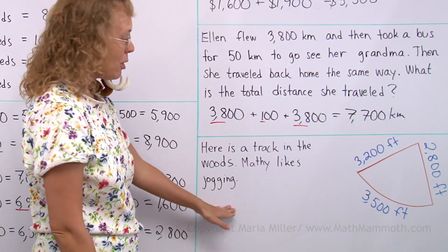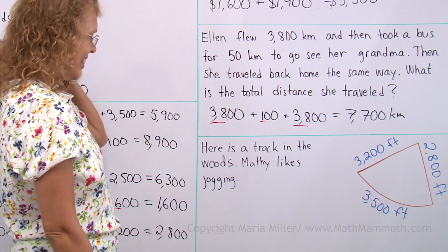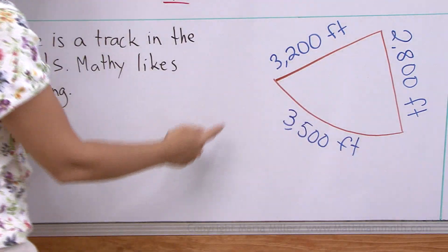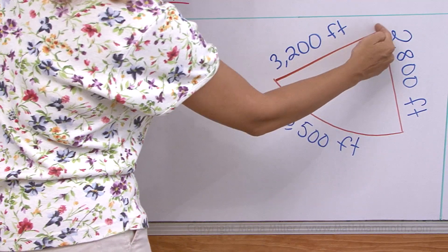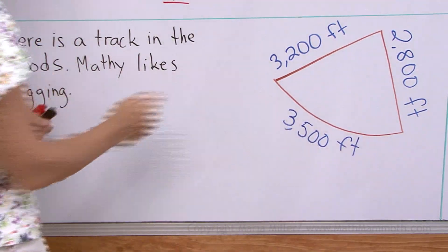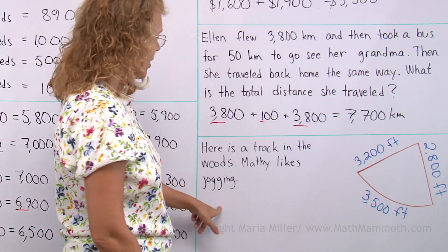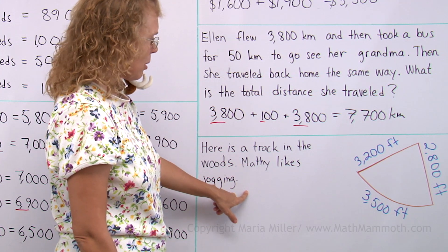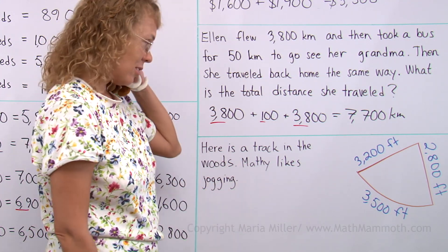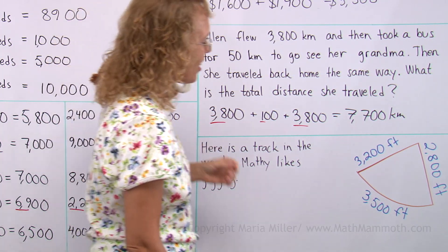Lastly, we have a word problem about Matthew. Aren't you happy? Here's a track in the woods. 3,200 feet this way and then 2,800 feet this way and then 3,500 feet back here. And Matthew likes jogging. But what's the question? Can you make up a question?